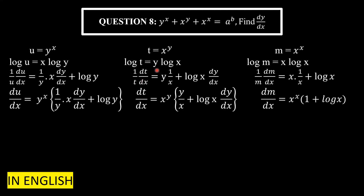The right-hand side is y·log(x). Applying the product rule: first function y as-is, multiplied by the derivative of log(x), which is 1/x; plus second function log(x) as-is, multiplied by the derivative of y, which is dy/dx. So: (1/t)·(dt/dx) = y·(1/x) + log(x)·(dy/dx).